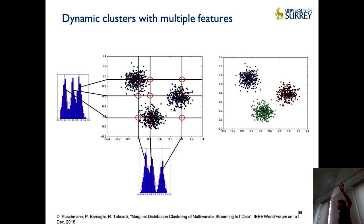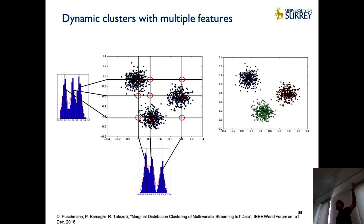We looked at the points where changes across x and y met, and those became the points where we started moving our centroid. The decision to change our centroid wasn't based on just one dimension but on how our probability distribution across different dimensions changed. That allowed us to create a more adaptive, dynamic clustering mechanism that is sensitive to different dimensions — keeping the centroid moving depending on how data changes over time.